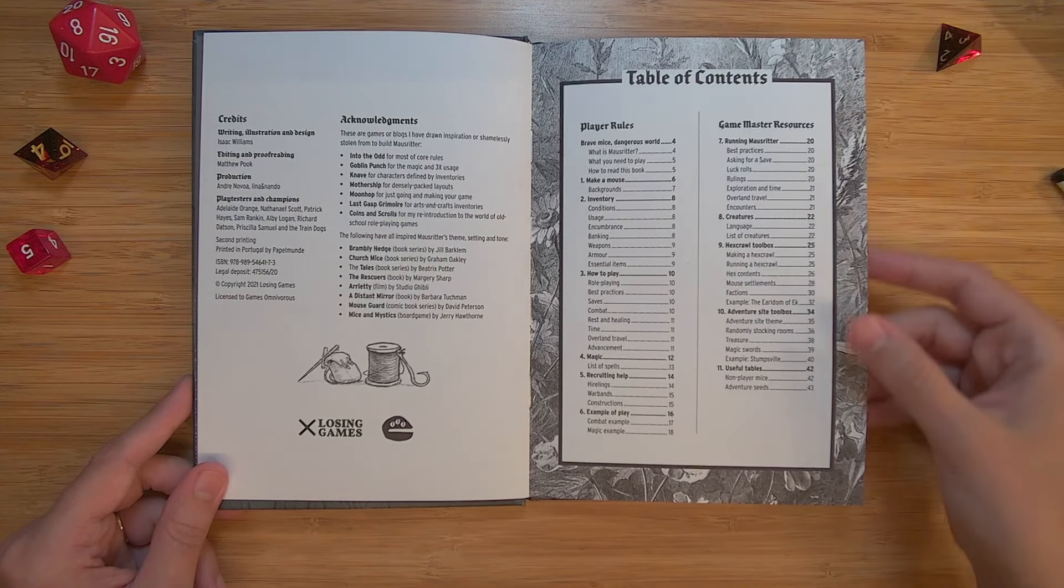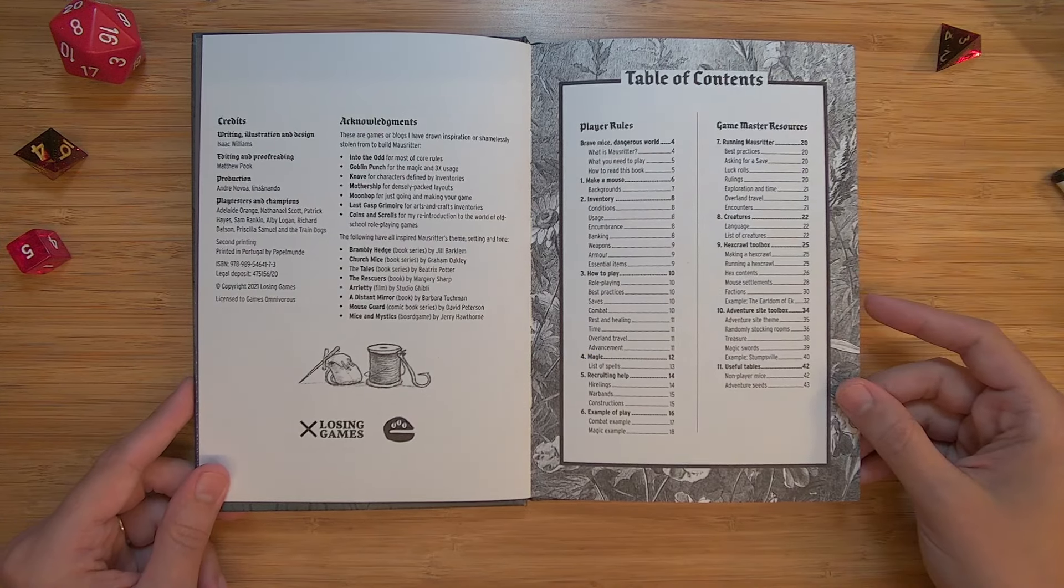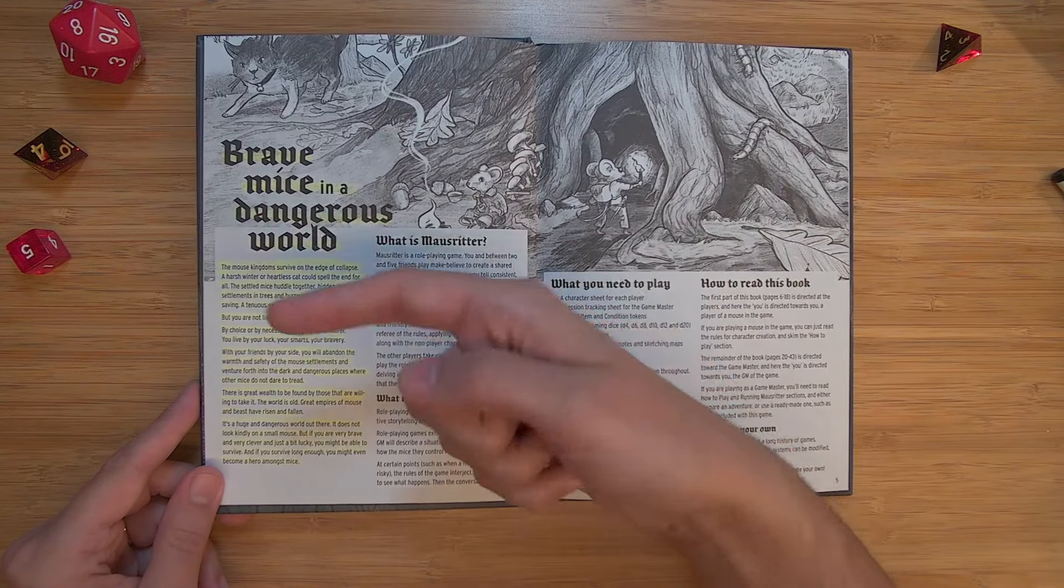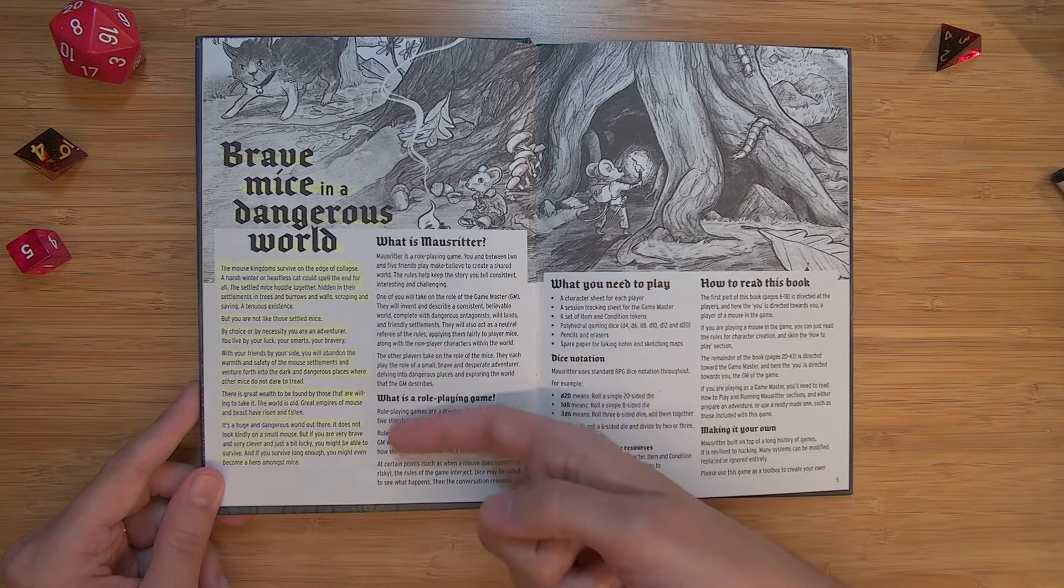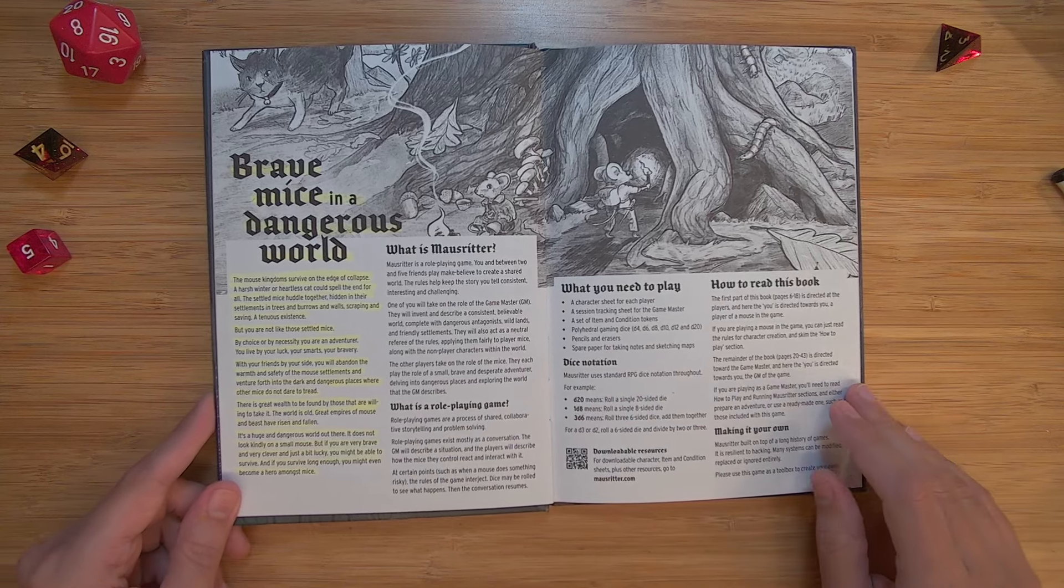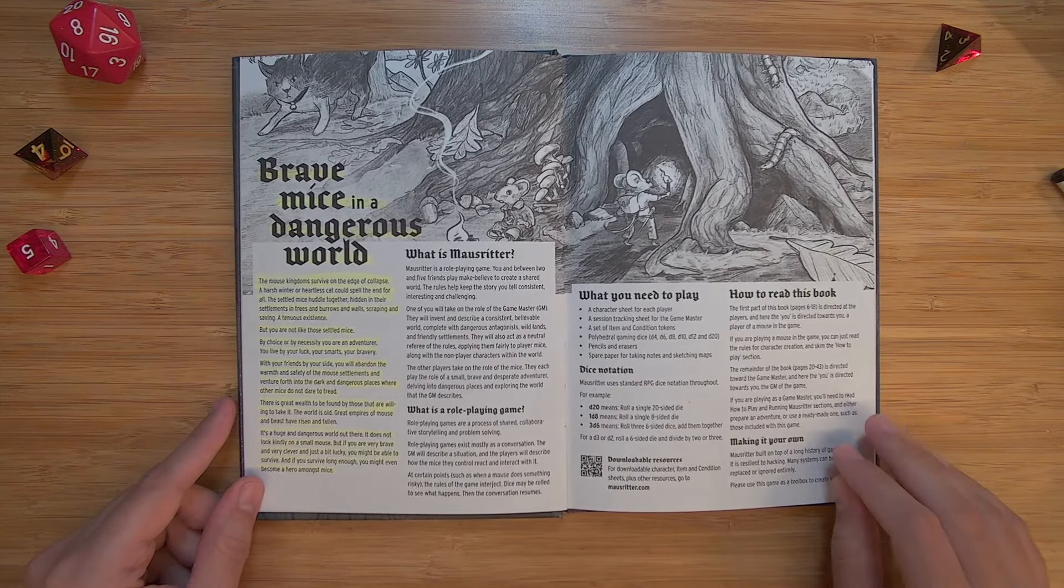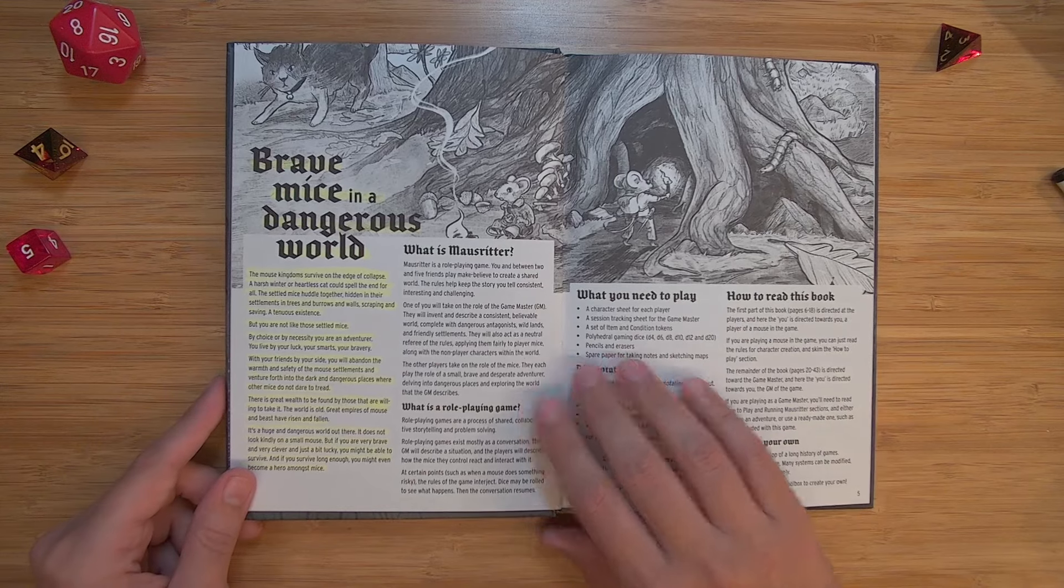Here we've got a table of contents, and it's written, illustrated, and designed by Isaac Williams. So we've got the triple threat there. Well done, Isaac. So you'll see some of these things here are highlighted. Those are highlights that I made myself. This is my own copy, as I was preparing to run this game for the first time.